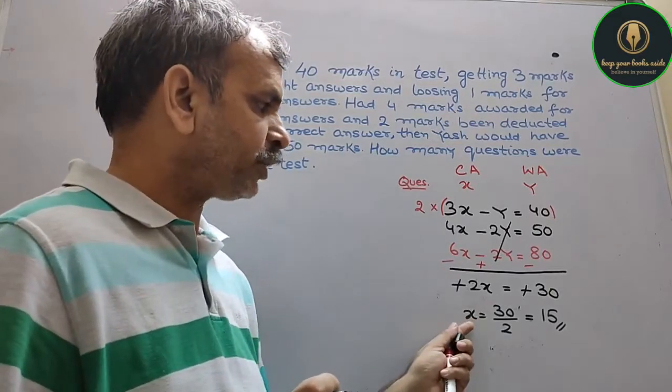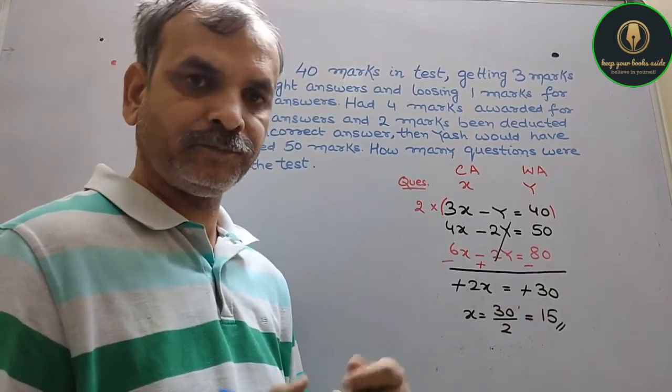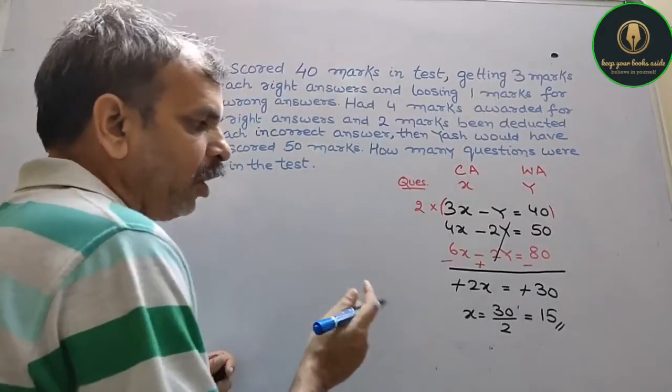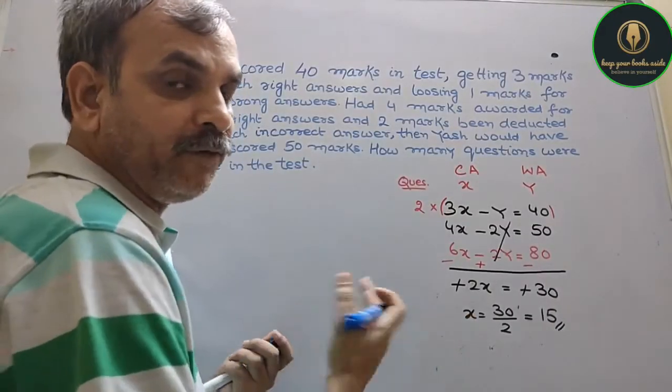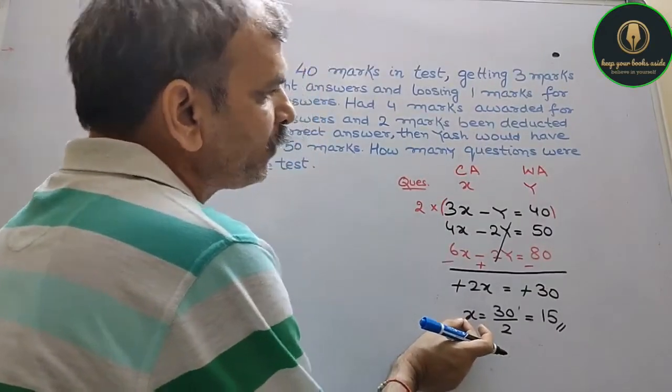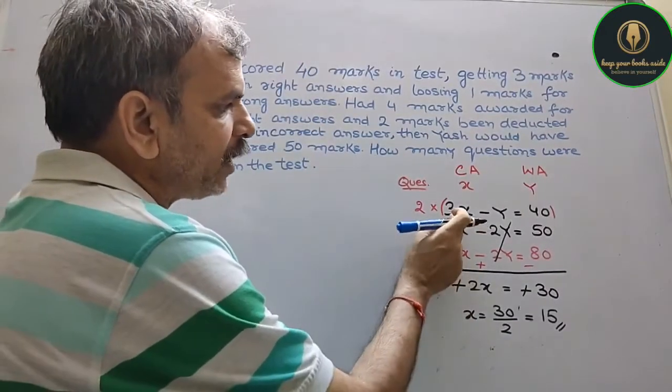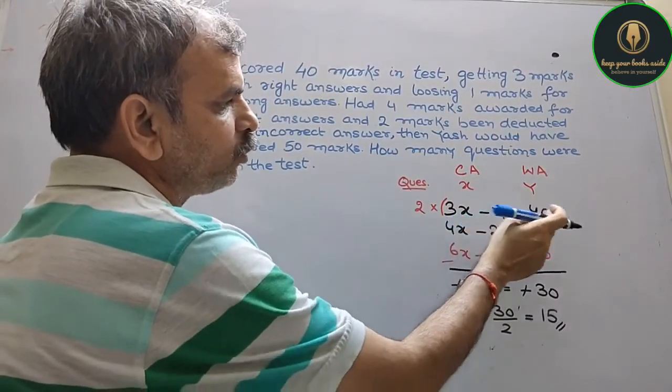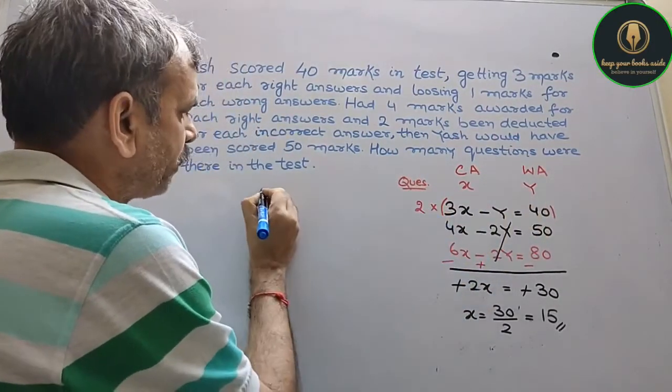That means X is the number of correct answers. So he got 15 questions correct. And how many did he get wrong? We will find out that Y. We will put the value of X in first equation: 3X minus Y equals 40.